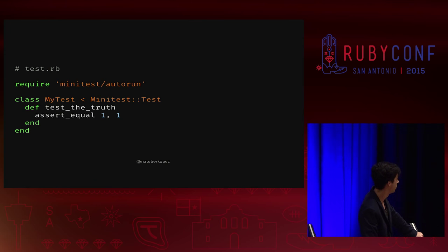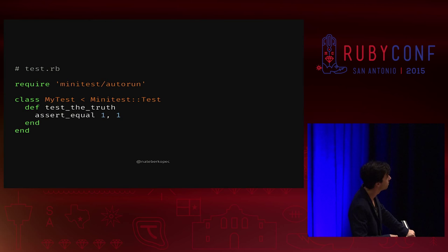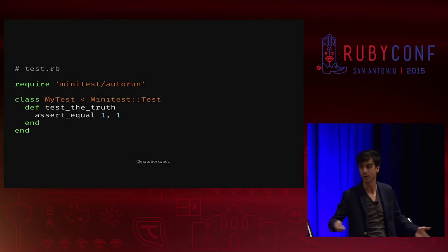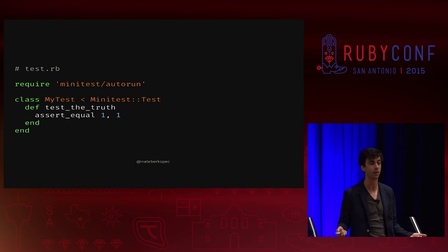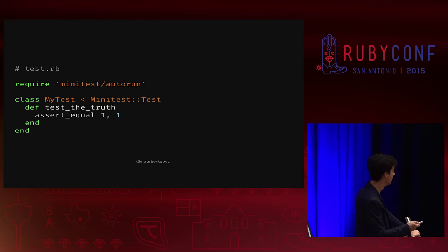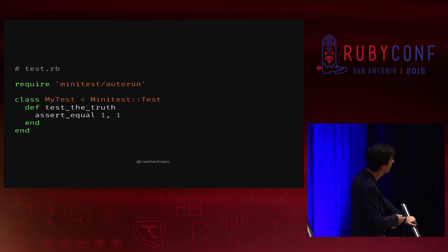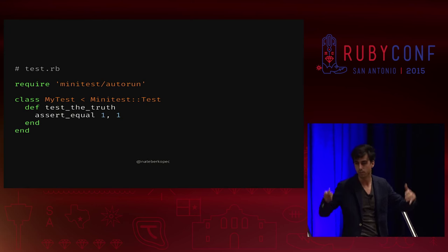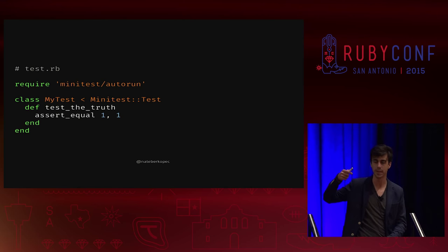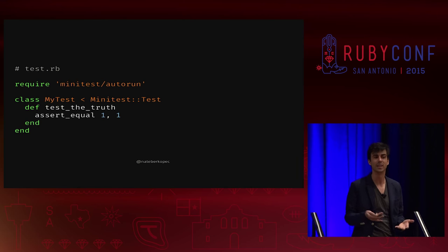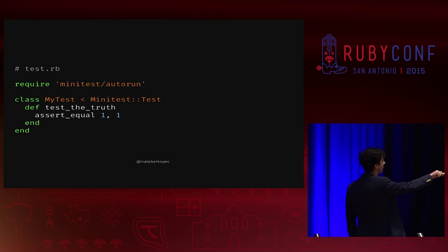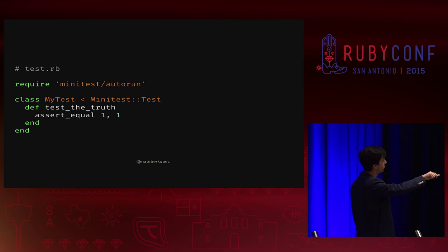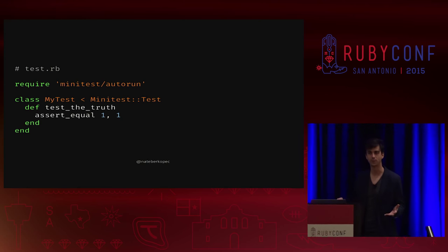We need to understand what Minitest::Test is and what it's going to give us, because as soon as we inherit from a class we get all of that class's methods. Then we have a method called test_the_truth. In a larger Minitest test, you'd notice that every method starts with test_underscore something — probably has a meaning we should look for in the code. And finally, assert_equal probably comes from Minitest::Test, taking two parameters. Those are the concepts we'll be looking for when digging into the code.